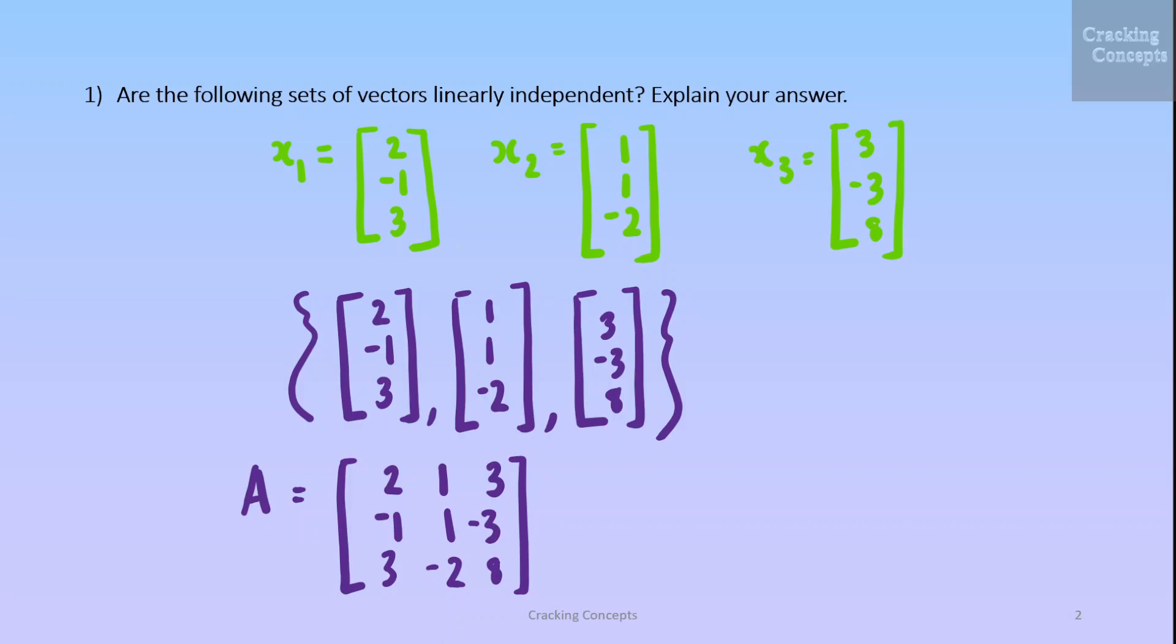The first question is we have to check whether the given set of vectors are linearly independent or not and give a reason for the same. So we are given x1, x2 and x3. In order to find whether they are linearly independent or not, first we will arrange them into a matrix which is got by combining all the three vectors and we'll name it as A.